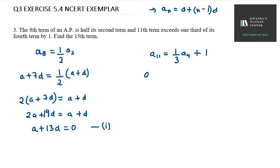Now A11 can be written as A plus 10D equals one over three, A4 can be written as A plus 3D plus 1. For solving this, you need to bring plus 1 to the left-hand side, so it will be A plus 10D minus 1 equal one over 3A plus 3D.